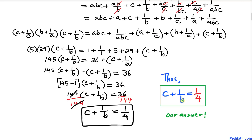So the value of c plus 1 over b turns out to be equal to 1 over 4, and that is our final answer. Thanks for watching, and please don't forget to subscribe to my channel for more exciting videos.